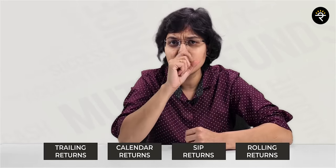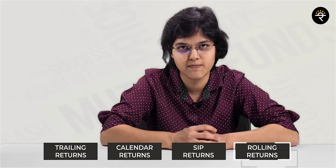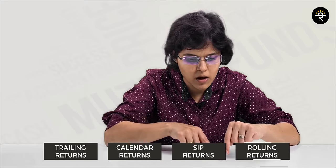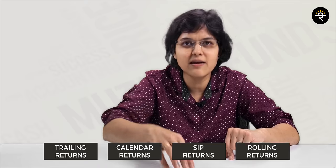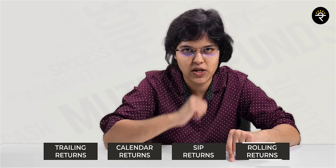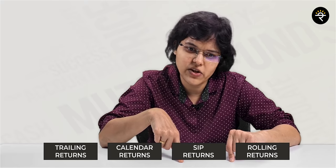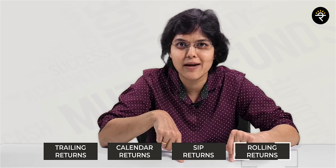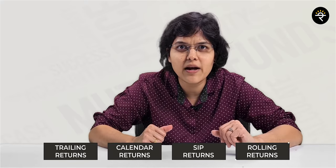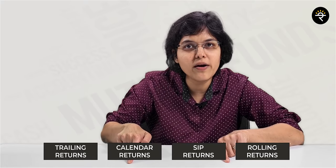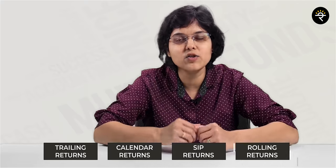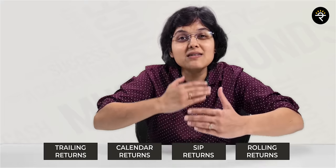Fourth one is a rolling return. Rolling return talks about the consistency of return. For example, if three ladies — Mrs. A, Mrs. B and Mrs. C — all invested in the same mutual fund for one year: A invested from January to January and got 12% return; B invested from June to June and got 10%; C invested from August to August but got minus 2%. Rolling returns focus more on how consistent the mutual fund is. A fund giving 12%, then 18%, then minus 2% is less preferable than one giving 7%, 8%, 9% — more or less similar each year.